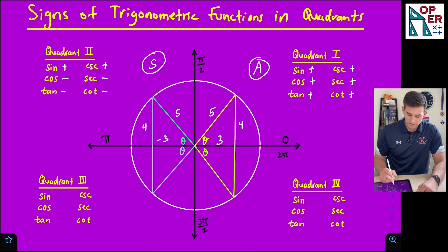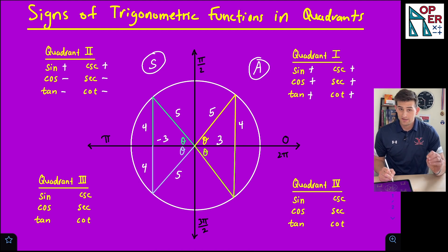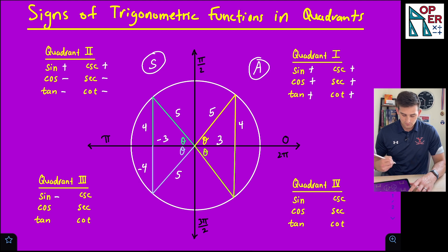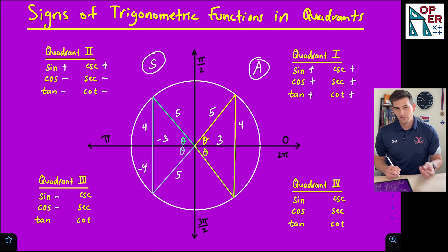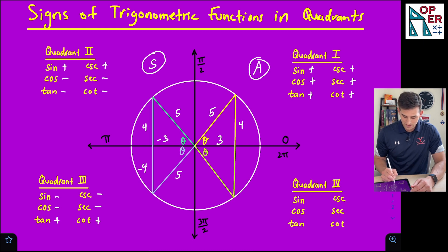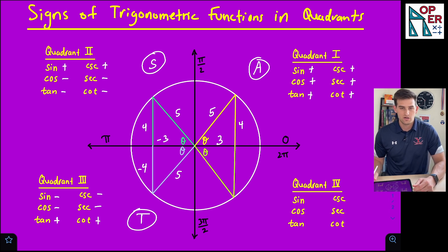Moving down to quadrant three with the same values: X is still negative three, and now four becomes negative four because we are moving down, so our Y value is negative. Sine — opposite over hypotenuse — is negative four over five, so sine is negative. Cosine — adjacent over hypotenuse — is negative three over five, so cosine is also negative. But tangent — opposite over adjacent — is negative over negative, so tangent is actually positive. Cosecant and secant are negative, but cotangent is positive. So we put a 'T' in quadrant three.